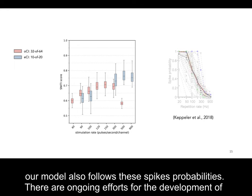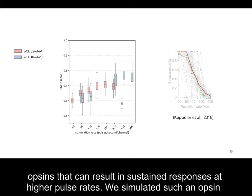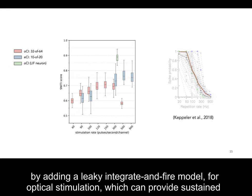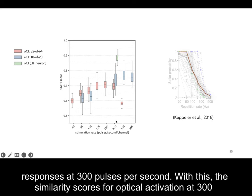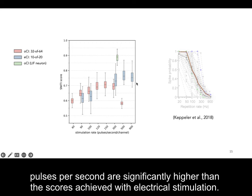There are ongoing efforts to develop opsins that can result in sustained responses at higher pulse rates. We simulated such an opsin by adding a leaky integrate-and-fire model for optical stimulation, which can provide sustained responses at 300 pulses per second. With this, the similarity scores for optical activation at 300 pulses per second are significantly higher than the scores achieved with electrical stimulation.